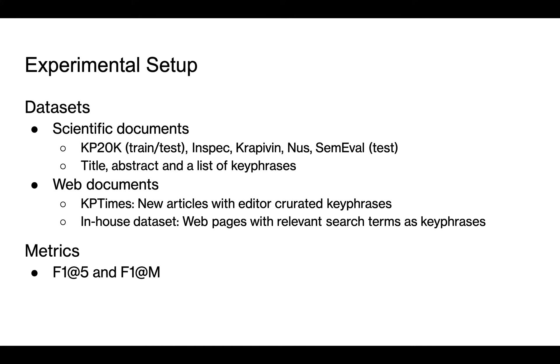We evaluated SIGNET using seven datasets. Five of them are scientific documents that use title and abstract to predict keyphrases. The model is trained with KP20K and evaluated on all the five datasets. We also use two datasets of webpages. KPTimes contains news articles and editor-curated keyphrases. The in-house dataset is created using webpages and their corresponding search queries from the click log of a large commercial search engine. We use F1 at 5 and F1 at M to evaluate the quality of the generated keyphrases. M means the actual number of generated keyphrases.